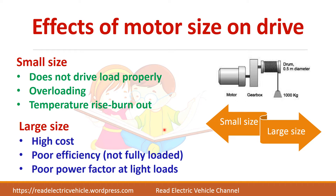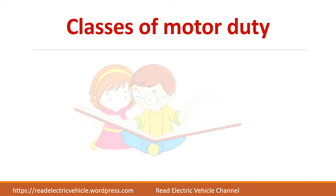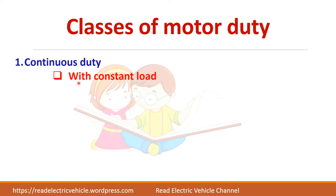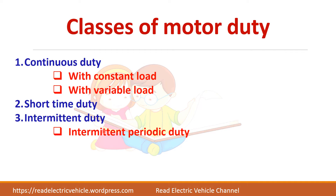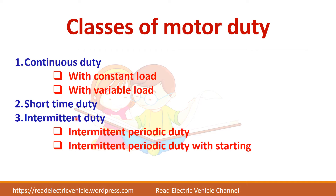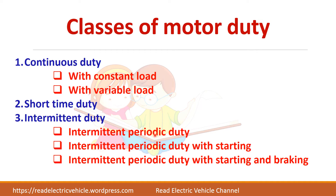All these factors are to be considered before choosing the motor for a drive. What are the different classes of motor duty? First, you have continuous duty. Then you have short time duty, and the third one is intermittent duty. In continuous duty, there are two cases: if the load is constant or if the load is variable. In intermittent duty, you have periodic duty where the load repeats periodically, and whether you have to consider the starting period and braking period. The major classifications are three types: continuous duty, short time duty, and intermittent duty.